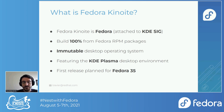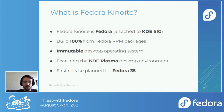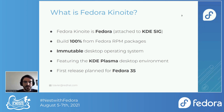What's Fedora Kinoite? Well, Fedora Kinoite is Fedora — that's the main important thing to remember. We are attached to the KDE SIG. We build from 100% Fedora RPM packages, so there's basically no changes. It's like you get Fedora packages just like they are in the regular distribution. We're calling Fedora Kinoite an immutable desktop operating system — not immutable in the sense that you cannot change it, but that you can control how it gets changed. It features the KDE Plasma desktop, and the first release will be for Fedora 35.